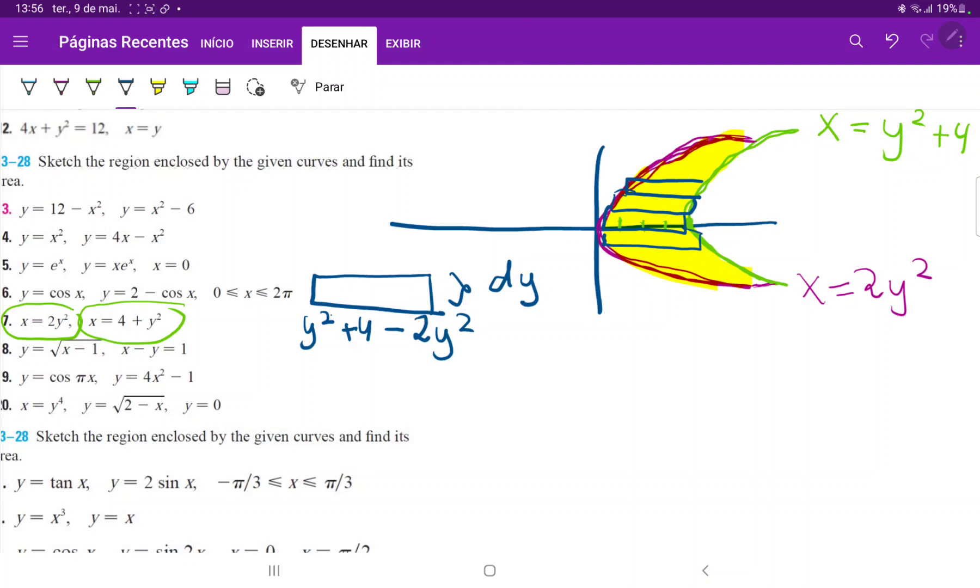So before we can set up our integral, we do need to find the bounds of integration. And the bounds of integration are defined by this point over here and this point over here, which are the points of intersection. So to find the points of intersection, we do have to set these equations equal to each other. So we have y squared plus four is equal to two y squared.